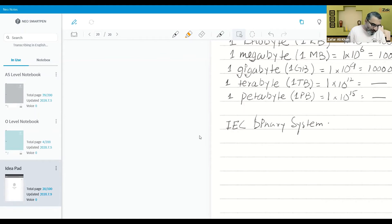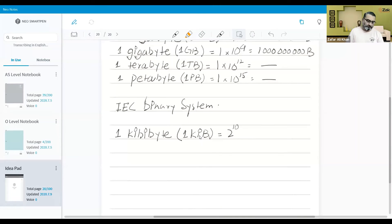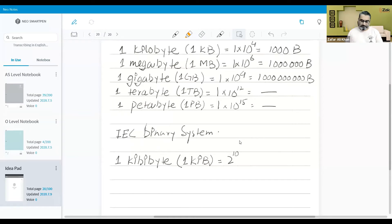Let's see. This is one kibibyte, K-I-B-I-byte. How do we put it in short form? One KiB. One kibibyte is equivalent of 2 to the power 10, not 10 to the power, but 2 to the power 10. That makes it 1024 bytes.